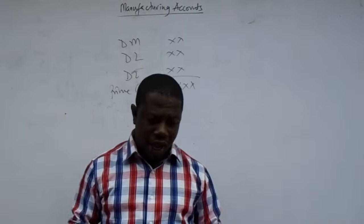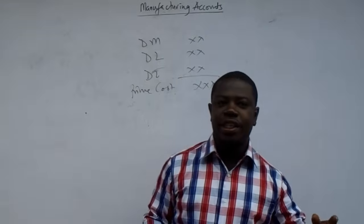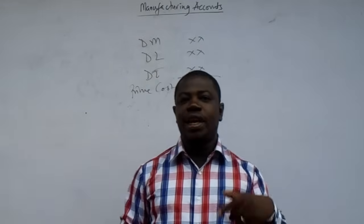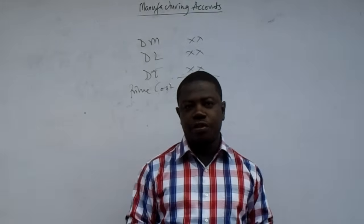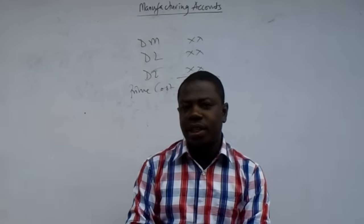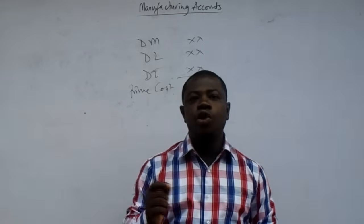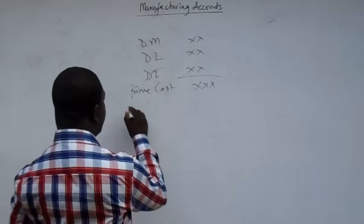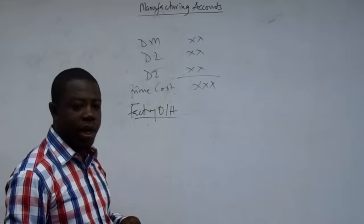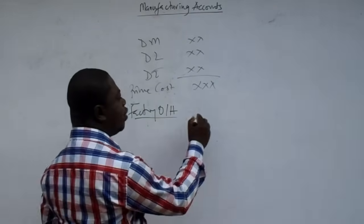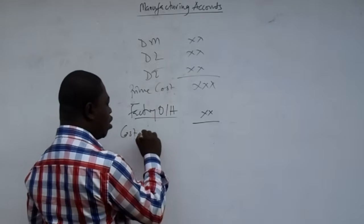After getting our prime cost, the next thing is to add our overheads. We have two main classifications: factory overheads and non-factory overheads. Factory overheads are related to production, so we also call them production overheads. When we want to determine our cost of production, it is the factory overheads that we add to the prime cost. We do not add the non-factory overheads. When we add our factory overheads to the prime cost, we get the cost of production.